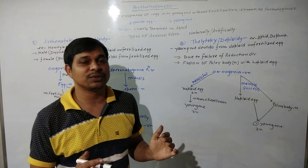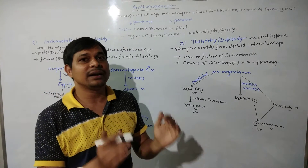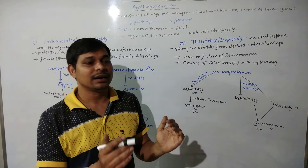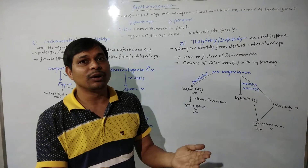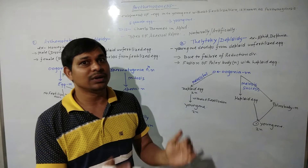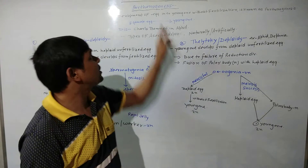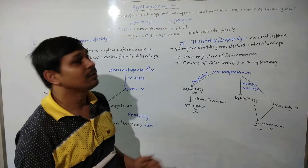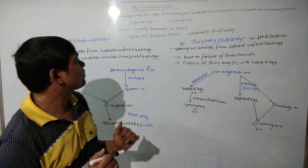In Parthenogenesis, the female gamete egg cells directly develop into the young one without fertilization. This process is called Parthenogenesis.